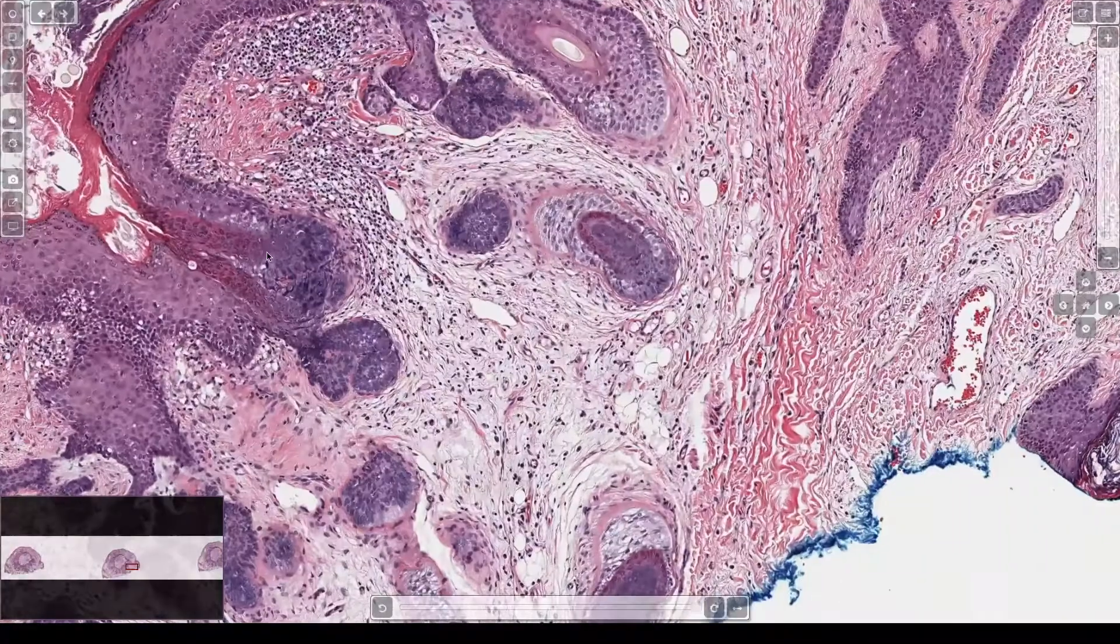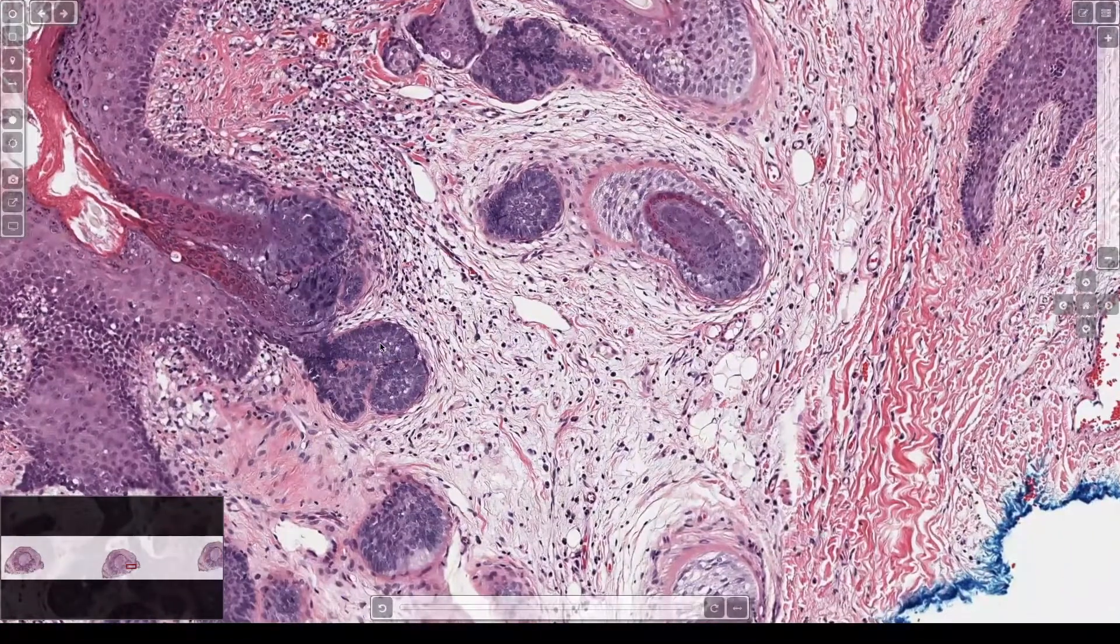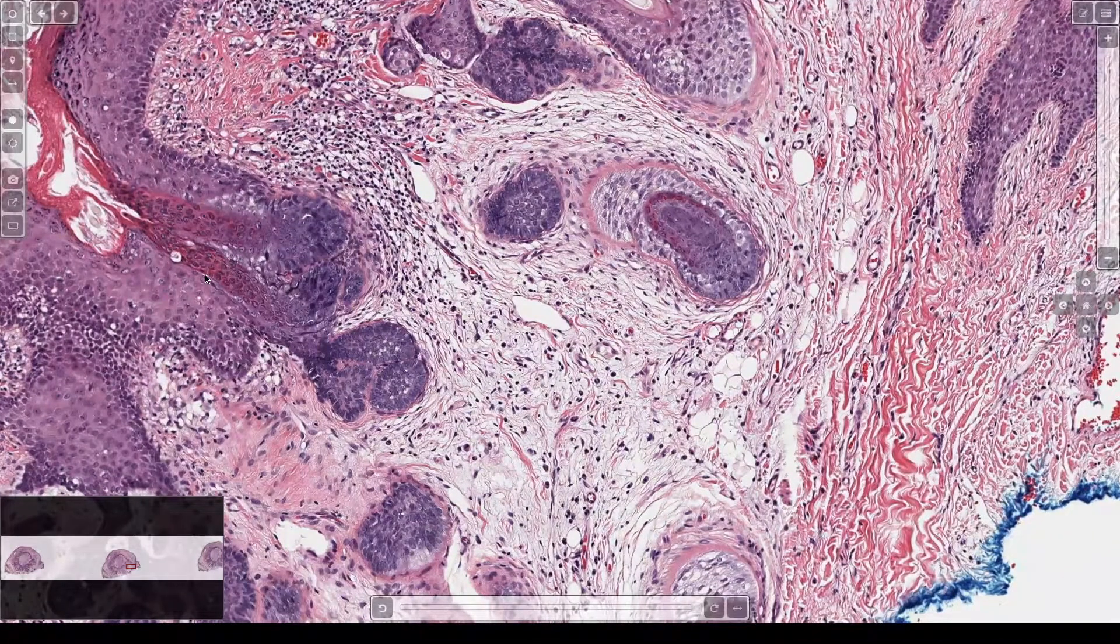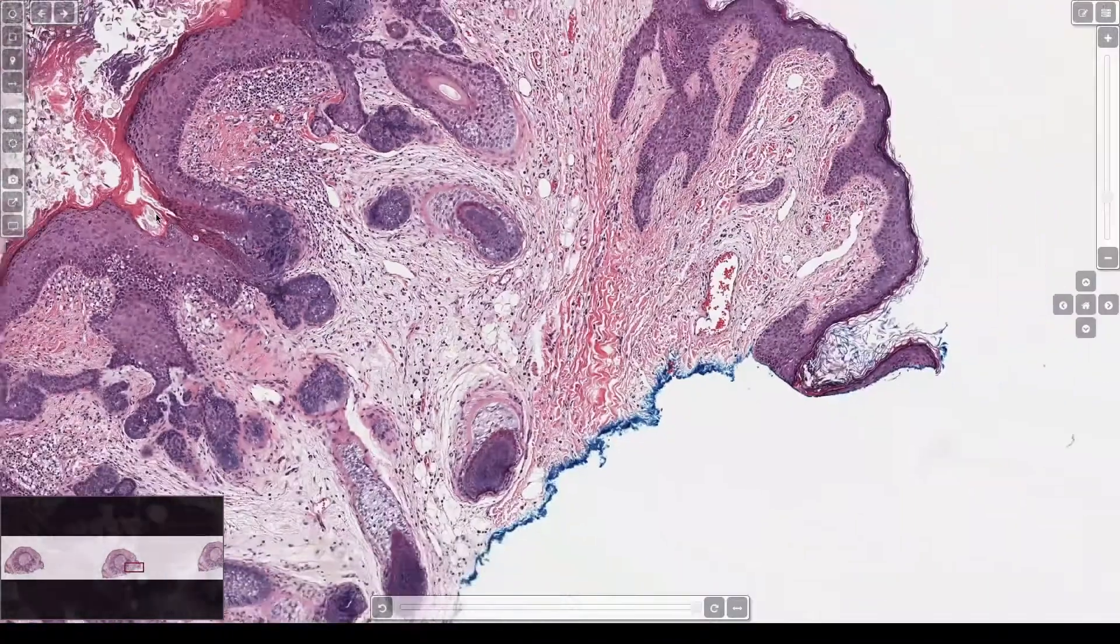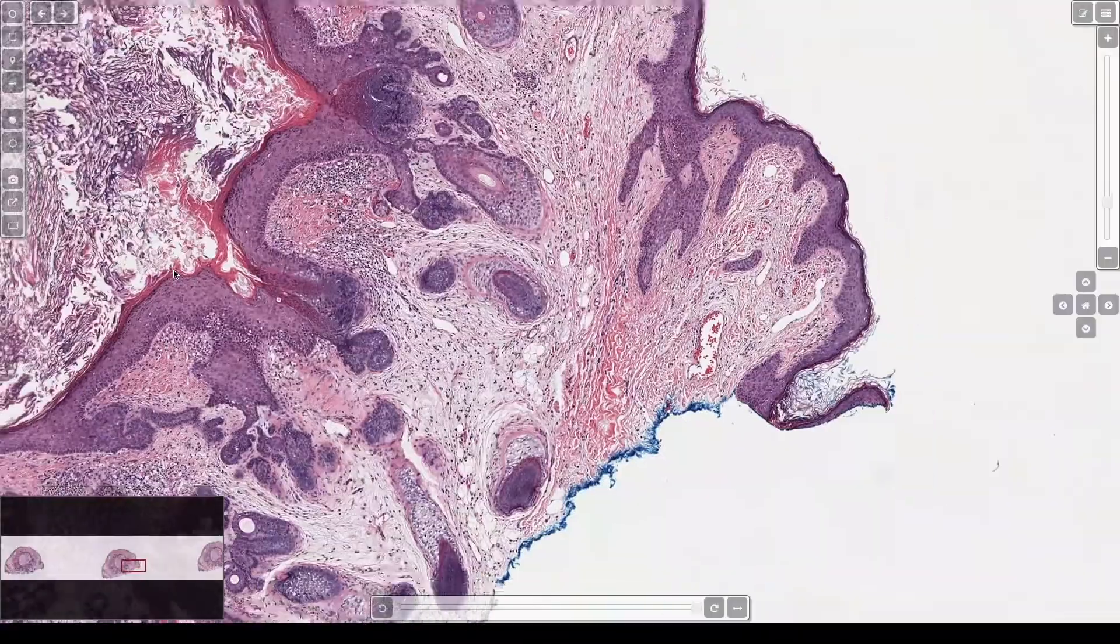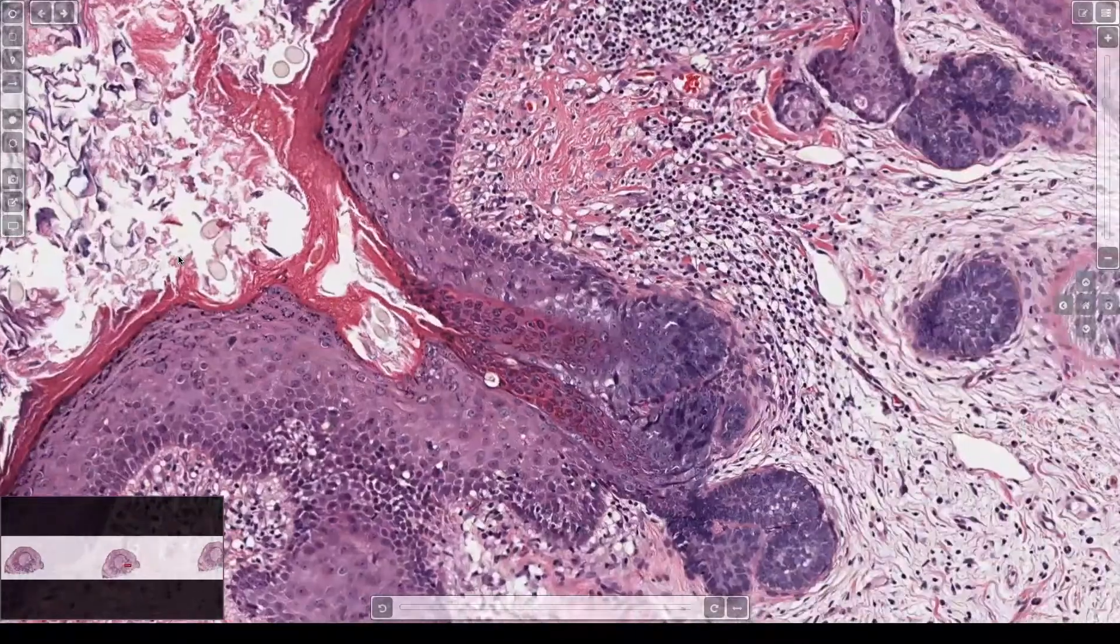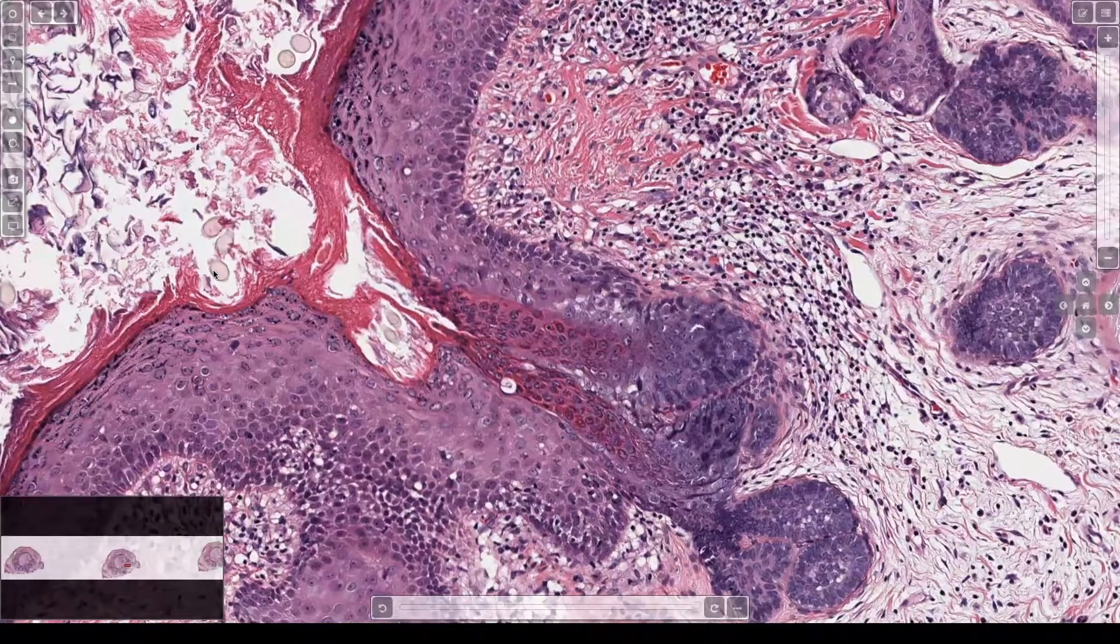And then looking around the outside, you can see little follicles and you've got matrical basaloid cells. You've got the inner root sheath with those beautiful bright red trichohyalin granules and they empty into the center. And you can even see there's a little hair follicle, I'm sorry, hair shafts in there too.